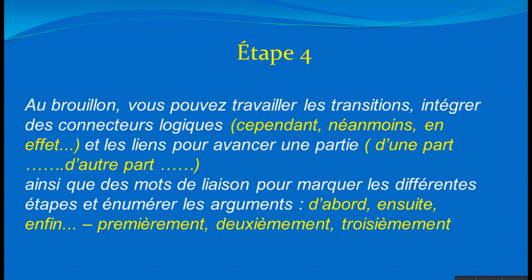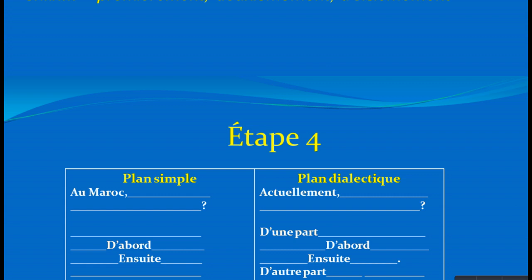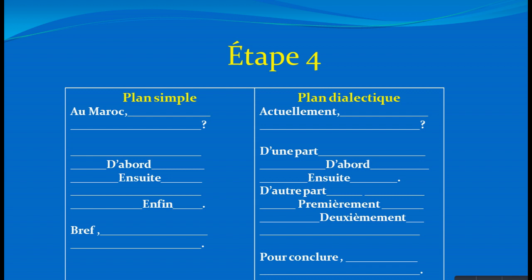Quatrième étape — les liens logiques : dans un plan simple, on utilise d'abord, ensuite, enfin, car on présente seulement trois arguments. Dans le plan dialectique, on utilise d'une part, d'autre part pour soutenir la thèse, puis premièrement, deuxièmement pour l'antithèse. L'introduction du plan simple peut commencer par « Au Maroc », celle du plan dialectique par « Actuellement ». Pour la conclusion, on utilise bref, pour conclure, enfin, finalement, etc. — des liens logiques que vous pouvez varier.